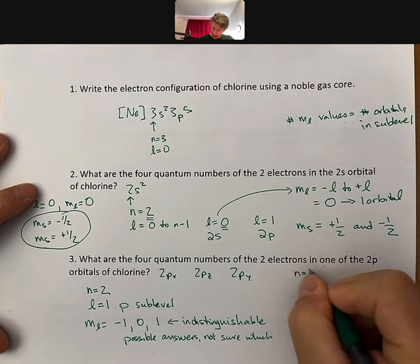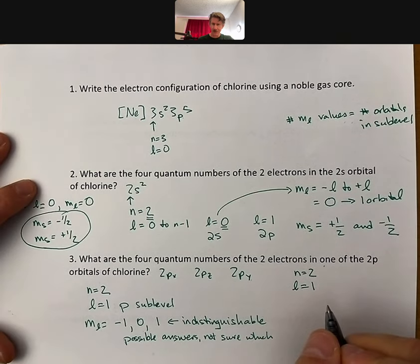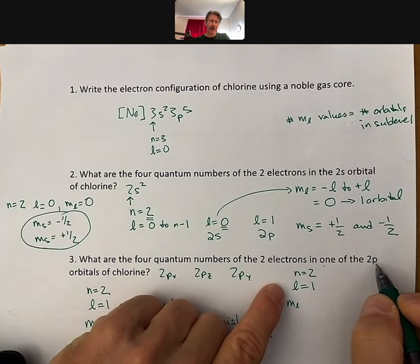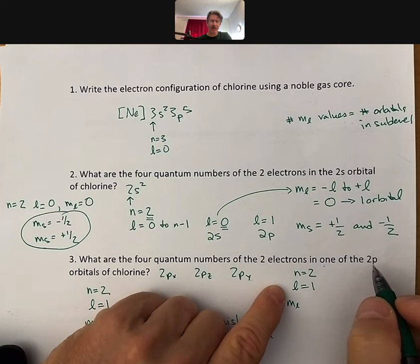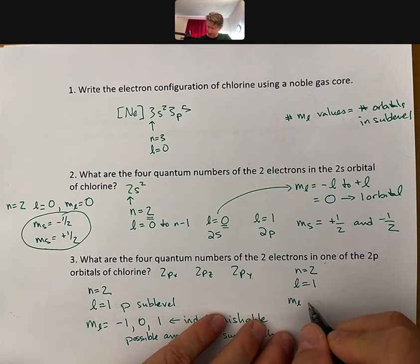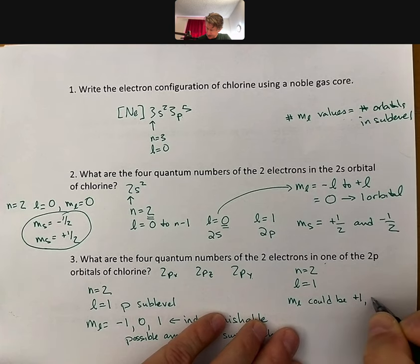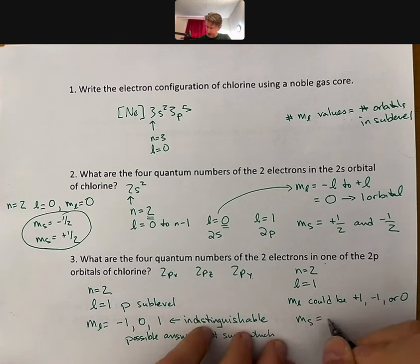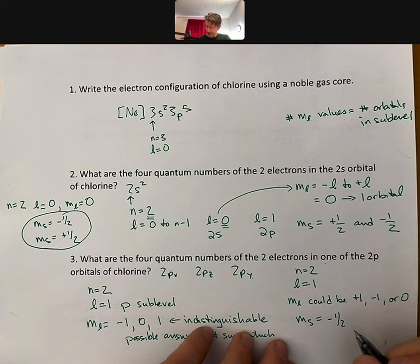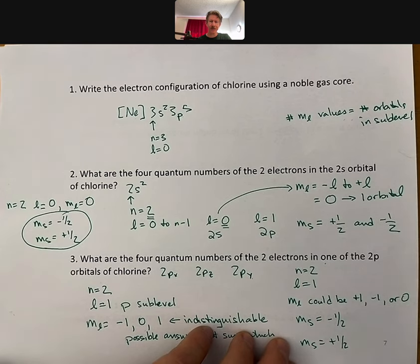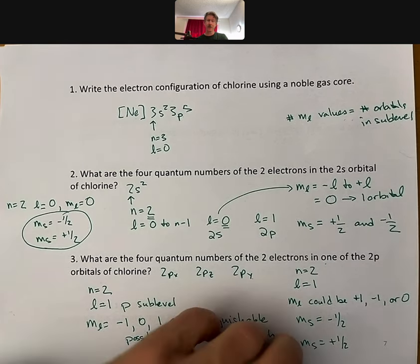Let's see if we can summarize. We know that n equals 2. We know that l equals 1. We know that m sub l, we didn't say which of the 2p's. And even if we did, we still can't tell which one it is, unless we actually are on the axis. And I won't ask that question. So, m sub l could be plus 1, minus 1, or 0. And m sub s will be minus half for one of the electrons. And m sub s will be plus half for the other electron. That is the best answer we can give for this one.